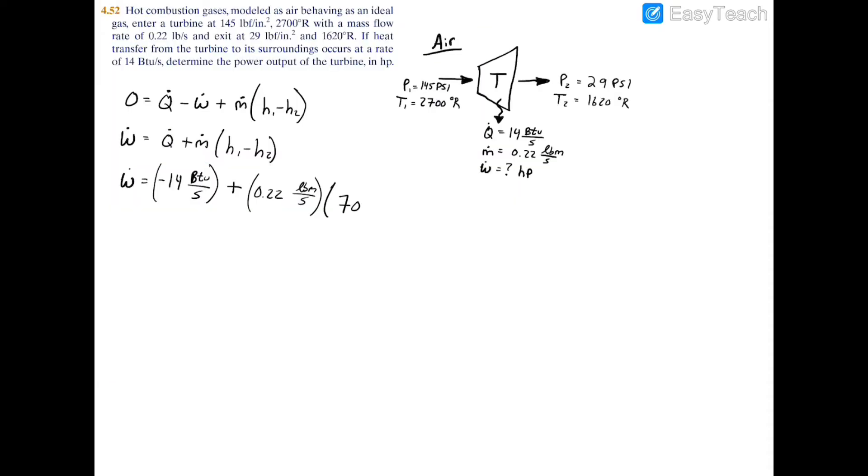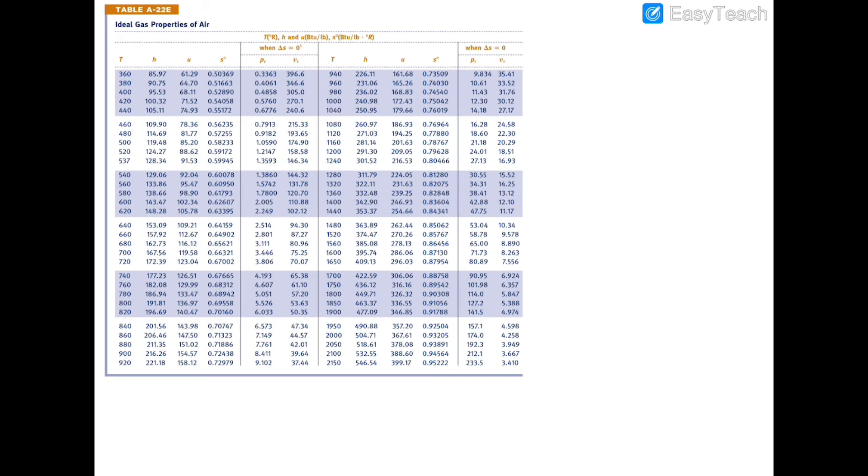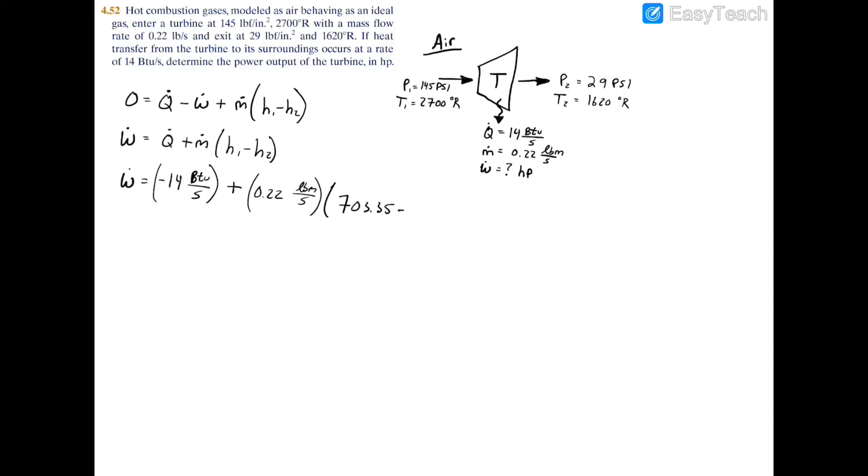So let's fill that in, so we have 703.35, and that's btu per pound mass, but we're going to add that at the end. First we have to subtract the h2 enthalpy, which is going to be at 1620 degrees Rankine. So if we go to table A22E and we see there's no 1620, but we have 1600 and 1650. So if we use some linear interpolation, we know that our enthalpy should be between these two numbers here, 395 and 409. And if you interpolate, you should have that h2 equals 401.1, and that's once again btu per pound mass.